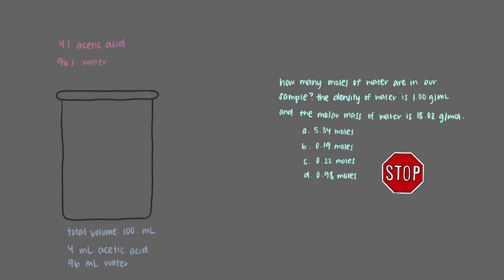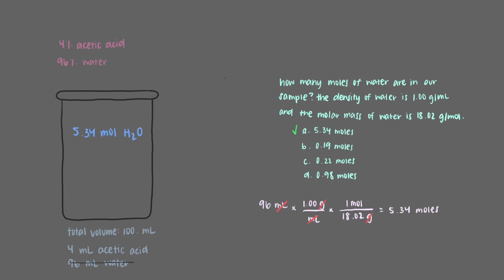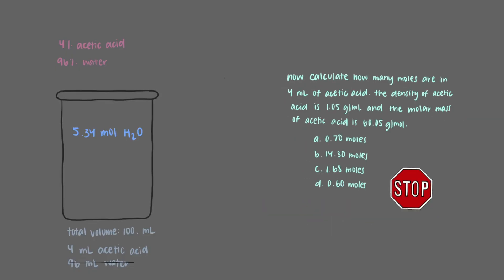How many moles of water are in our sample? The density of water is 1.00 grams per milliliter and the molar mass of water is 18.02 grams per mole. There are 5.34 moles in 96 milliliters of water. We start with 96 milliliters of water and use the density as our conversion factor to get us to grams, then use the molar mass of water to get us into moles. Once we multiply everything out, we get 5.34 moles of water.